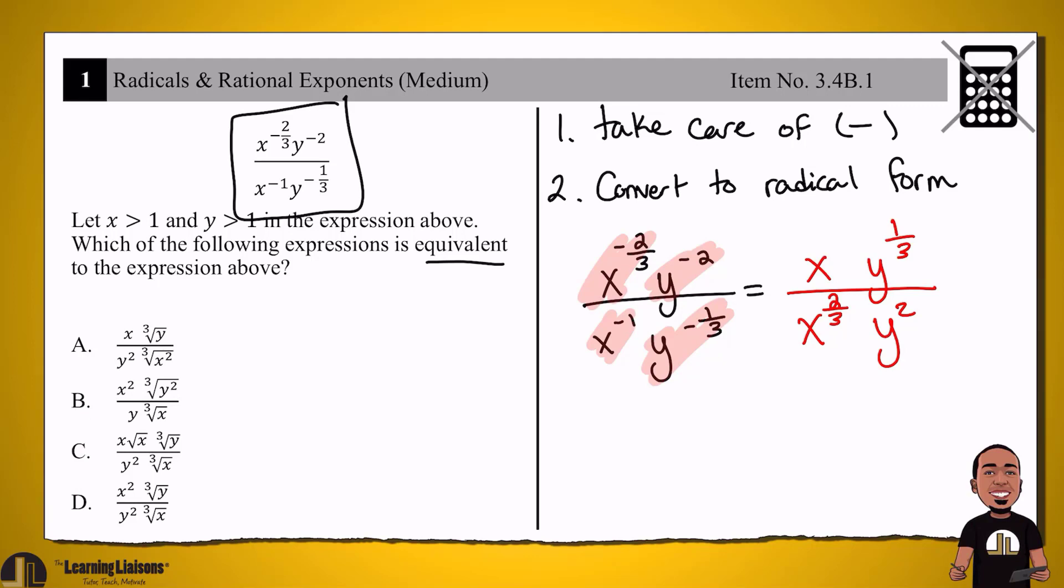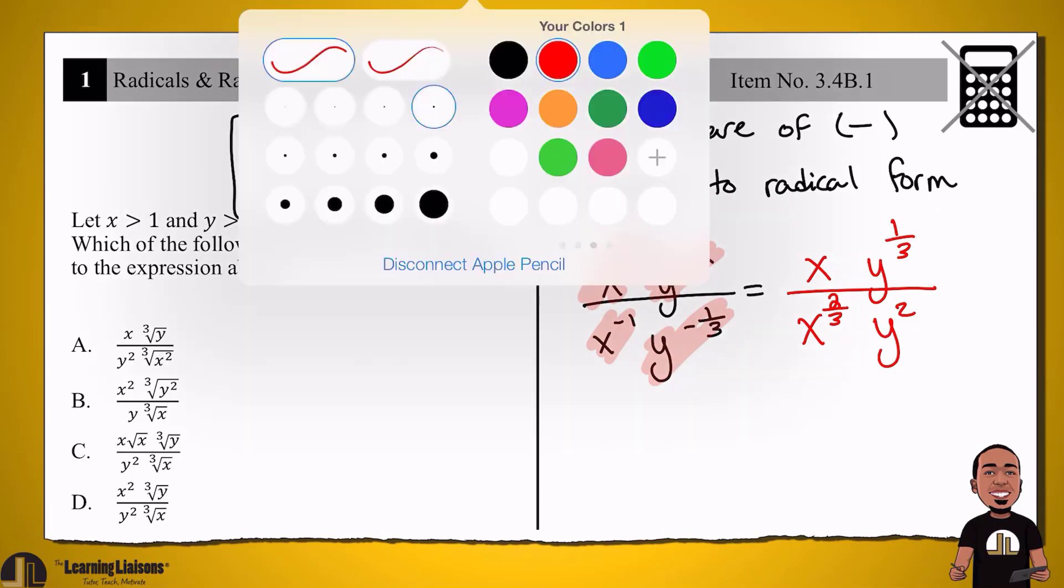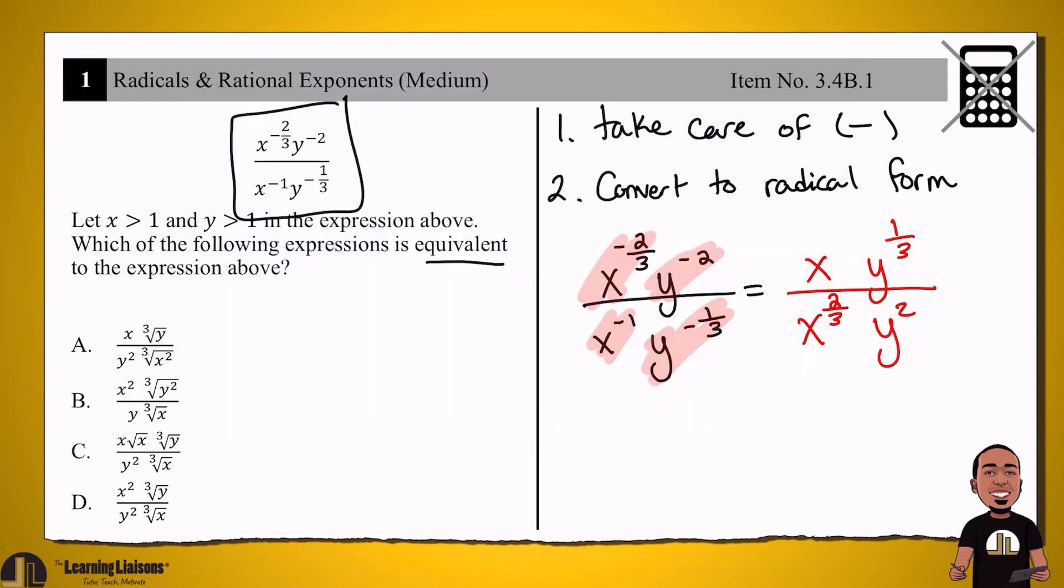So up next, we're going to go ahead and convert to radical form. So I'll go ahead and use blue for that. So let's go ahead and see what we have to convert. We have the x and the y squared. Those don't need to get converted. It's the y to the power of one-third. And remember, the rule of thumb is the numerator is the power, the denominator is the root. So we will have the third root of y to the power of one, or the cube root of y.